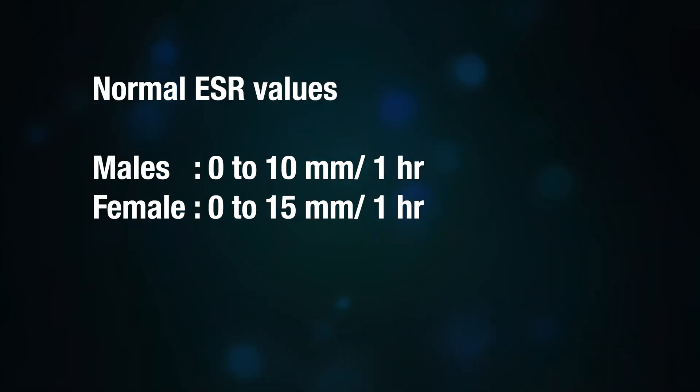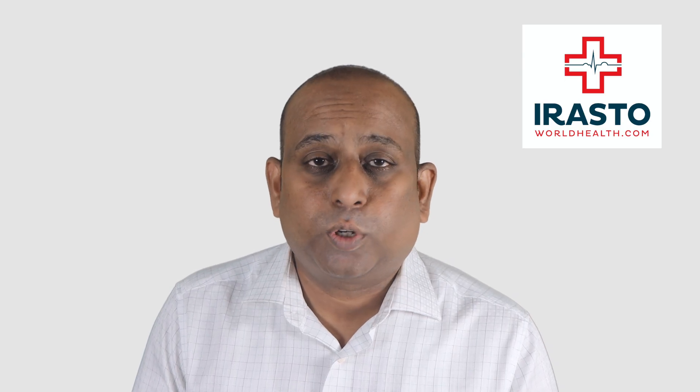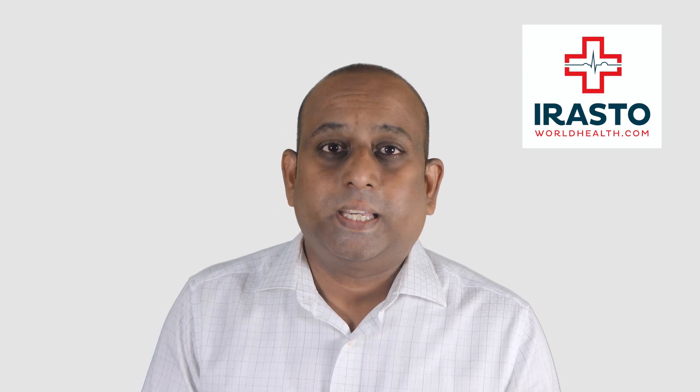ESR also increases in menstruation due to loss of blood and RBCs. Why is ESR high in females? It is high in females because of a low number of RBCs. ESR is low in children and infants because of a higher number of RBCs.